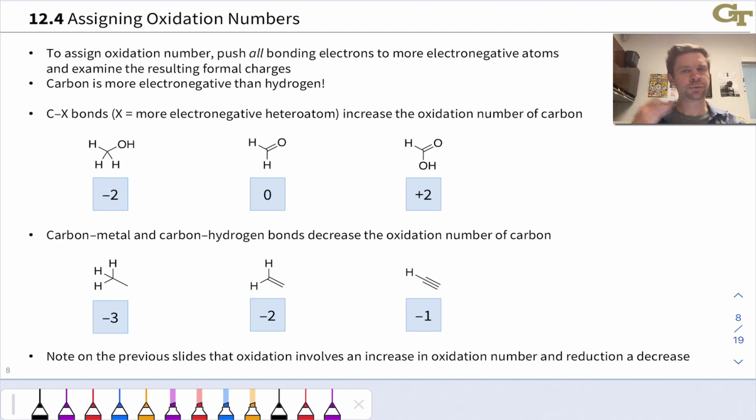The basic idea is actually the same as assigning oxidation number to any atom within any molecular structure. We're going to push all bonding electrons to more electronegative atoms, imagining each bond as ionic, where the more electronegative partner in the bond actually has both electrons, or all electrons in the bond if it's a multiple bond. We then examine the resulting formal charges, and that formal charge corresponds to the oxidation number of that atom, that carbon, for example.